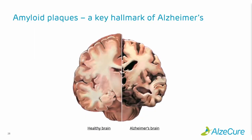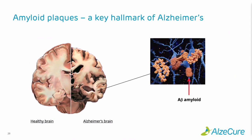We'll start by looking at a section through the brain. On the right-hand side you can see an Alzheimer's disease brain, and on the left-hand side a healthy brain. What is quite apparent is the massive volume loss in the diseased brain, which is the result of massive neuronal loss. Another key hallmark of Alzheimer's disease is the appearance of so-called amyloid plaques composed of the amyloid A-beta peptide — a key hallmark that Alzheimer's saw already in 1906.